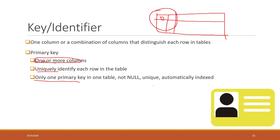You can have only one primary key in each table, because it is kind of the ID of each single table. The value cannot be null, so you must have a value — you cannot leave it blank. The value must be unique. And that column is always indexed, because we should index the columns that we query most frequently, and the primary key is one that will be automatically indexed.